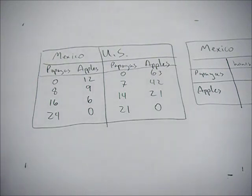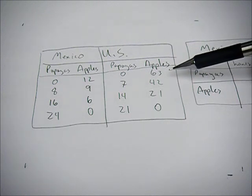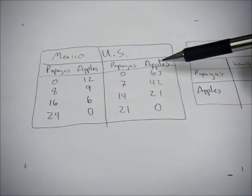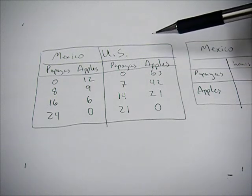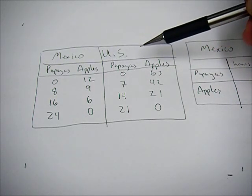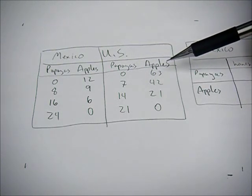So the first and probably the most common way the information can be shown to you is in this type of table where it's showing you the trade-off between the goods that can be produced and those who are manufacturing them. So for example, here we have Mexico and the U.S., and they can decide to produce papayas or apples.